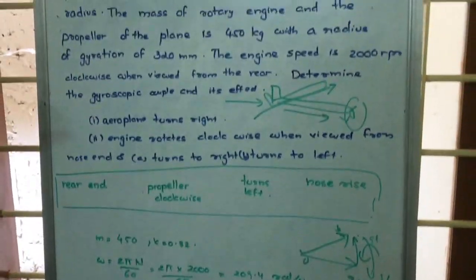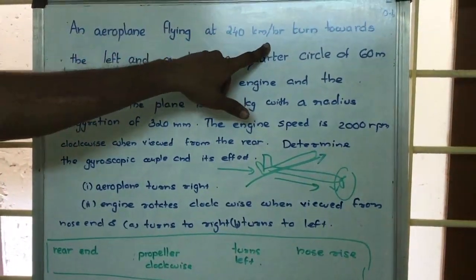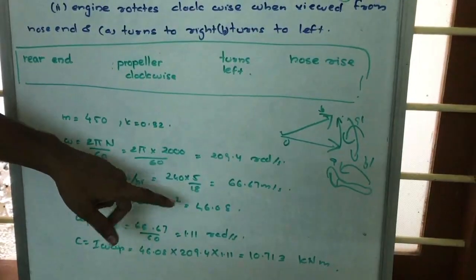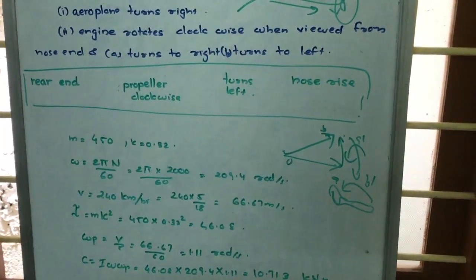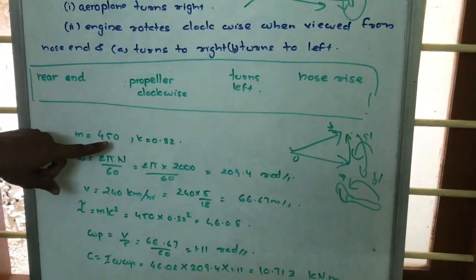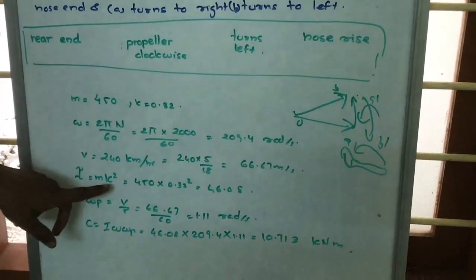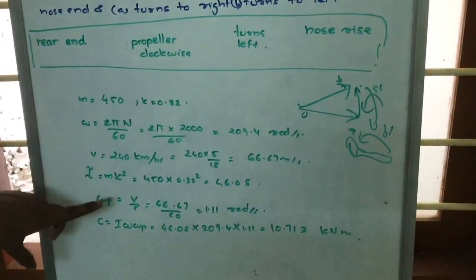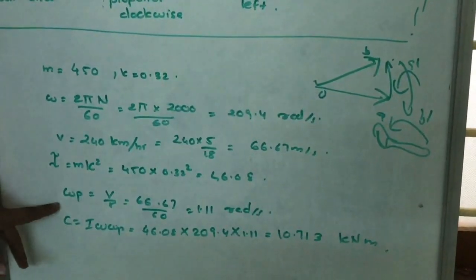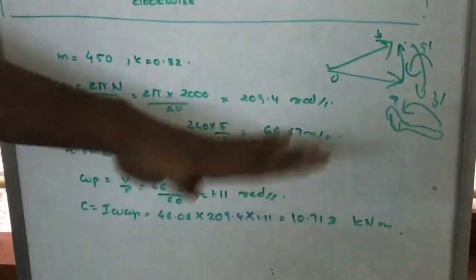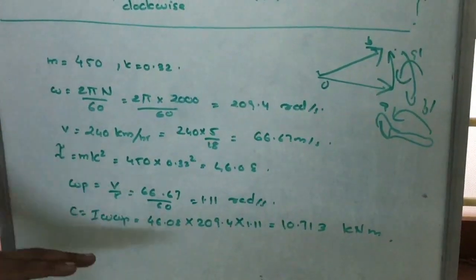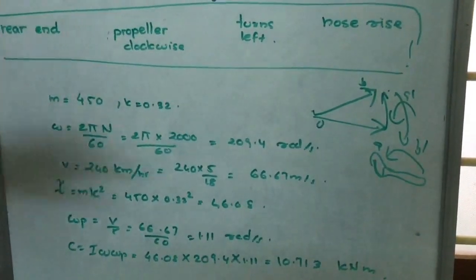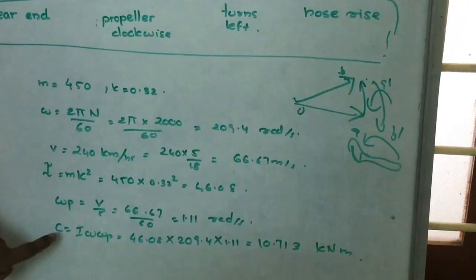Now let's go to the question. It is given that the aeroplane is flying at 240 km per hour. Converting to meters per second by multiplying by 5/18, we get 66.67 meters per second. Mass is given as 450 kg, and K is given as 0.32 m. So we can find the moment of inertia I = Mk² = 46.08 kg·m². Since velocity and radius are given, we can find the angular velocity of precession: Omega P = velocity divided by radius = 1.01 rad/s.